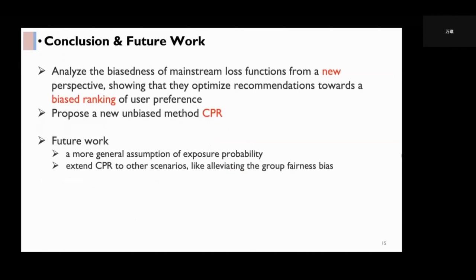To sum up, in this work, we first analyze the biasedness of mainstream loss functions from a new ranking perspective, showing that they optimize recommendations towards a biased ranking of user preference. Then, we propose a new unbiased method, CPR.